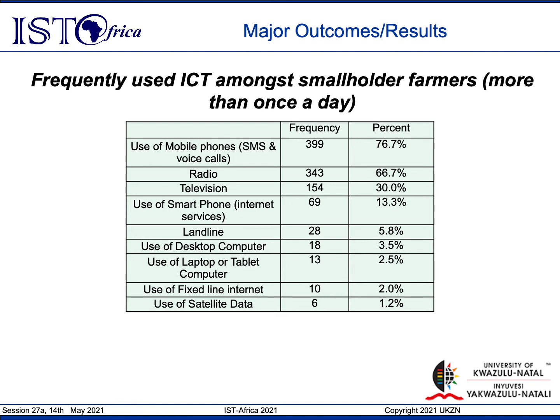The use of smartphones was at 13.3%. Land phones at 5.8%, desktops at 3.5%, and laptops and tablets at 2.5%. The least used ICTs were identified as internet, fixed-line internet, and satellites.